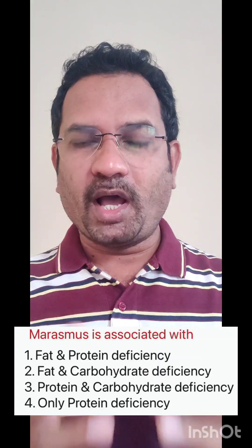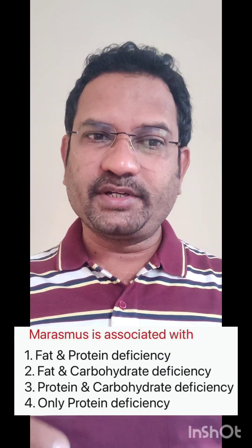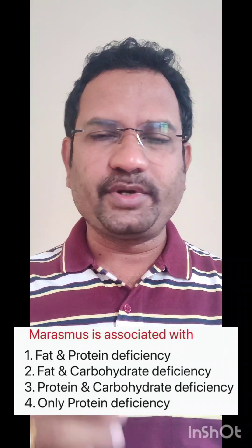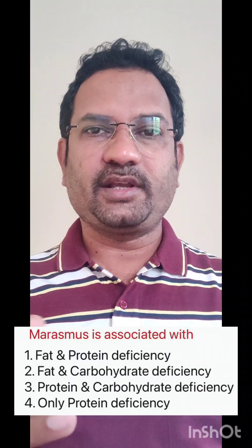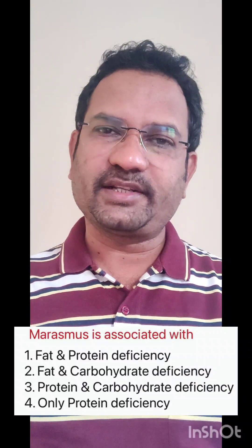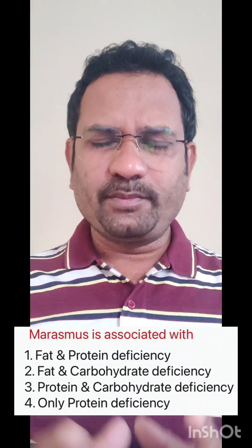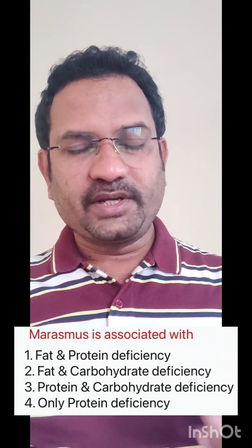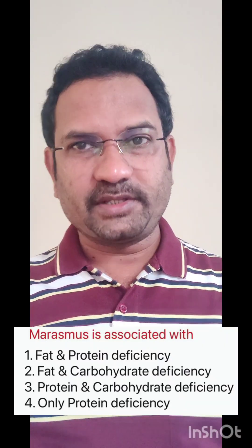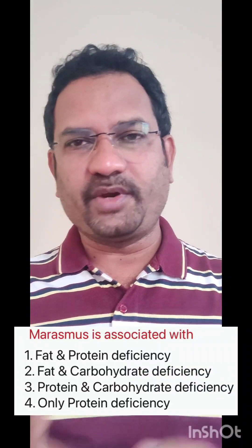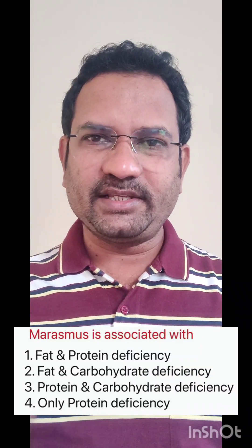The next question: marasmus is associated with? Marasmus is a malnutrition disease associated with protein and carbohydrate deficiency. When especially young children do not have enough protein and carbohydrate, they will have muscle wasting and swollen abdomen — these are all the characteristics of marasmus. There is one more disease, kwashiorkor, which is characterized by protein deficiency alone. When kids have access to carbohydrates but do not have enough protein intake, that results in kwashiorkor. But marasmus is related to both protein and carbohydrate deficiency. Option three is the right answer for this question.